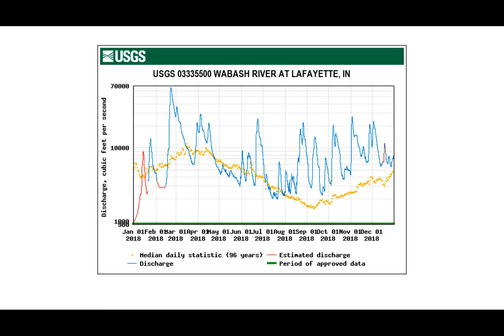You can see that the discharge in the Wabash River is above zero — most of the time it's above about 3000 CFS. Even though this looks like zero here, the minimum value is close to 1000 CFS. When you see a hydrograph that never reaches zero, what that means is there is always water flowing through that stream or river, and we usually call that a perennial river or stream. So the hydrograph we see here for the Wabash is for a perennial river.